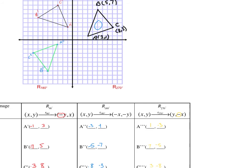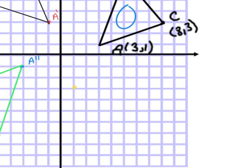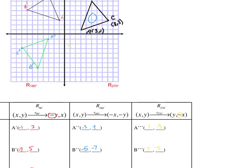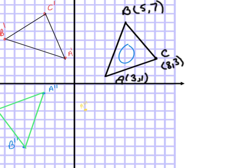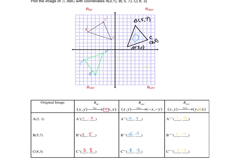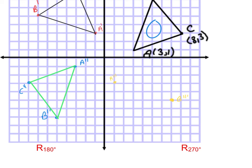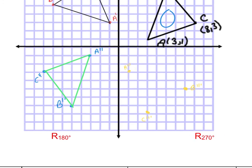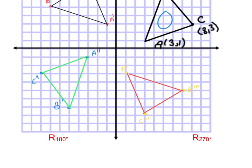Let's plot these points. (1,-3). That's a triple prime. (7,-5). That's B triple prime. And then C triple prime is (3,-8). And now we're going to connect those points with a straight line. And there's our rotation of 270 degrees.